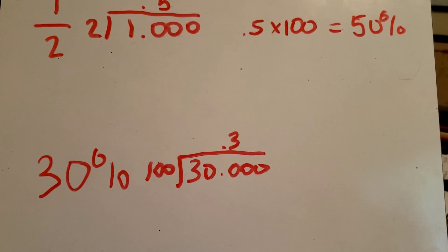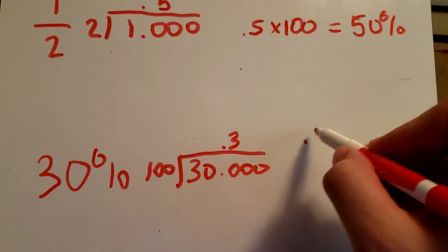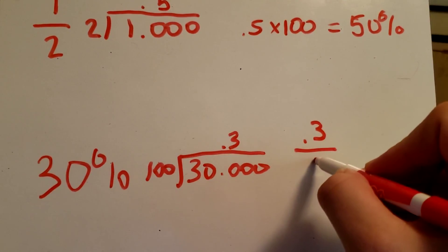30 percent is 0.3, and now if we wanted to make that into a fraction, we would just need to put 0.3 over 1.